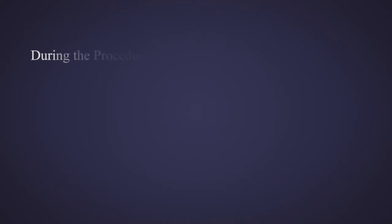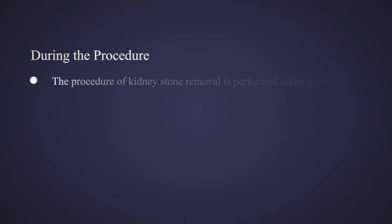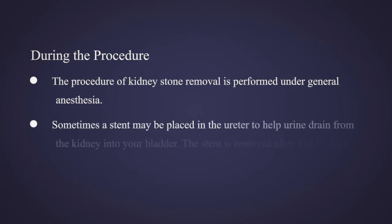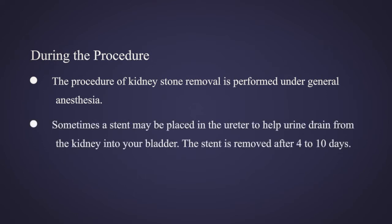The procedure of kidney stone removal is performed under general anesthesia. A stent may be placed in the ureter to help urine drain from the kidney into the bladder. The stent is removed after 4 to 10 days.